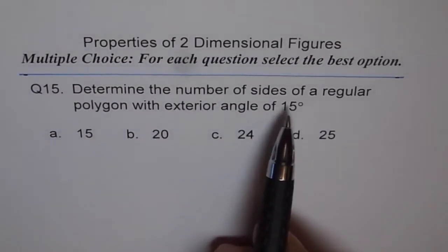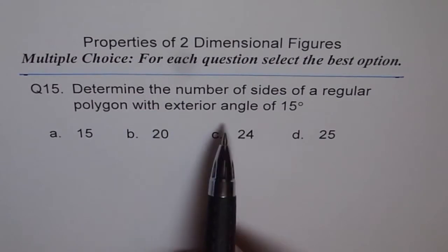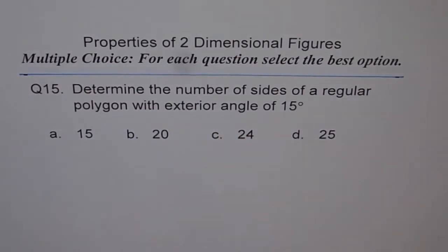Determine the number of sides of a regular polygon with exterior angle of 15 degrees. How many sides do you think this polygon should have? Make up your choice and then look into my solution. I mean you can stop the video till you make your decision, and then look for the solution.